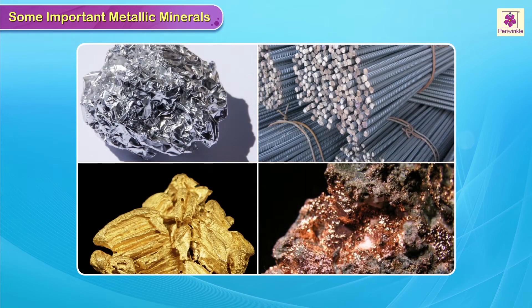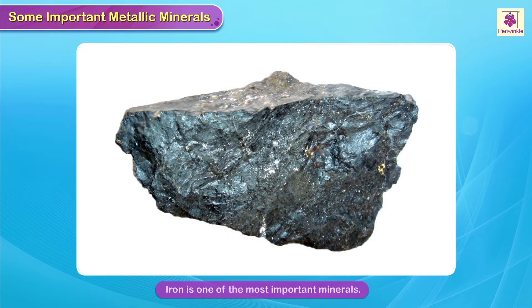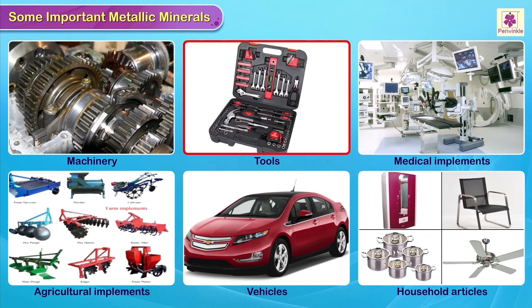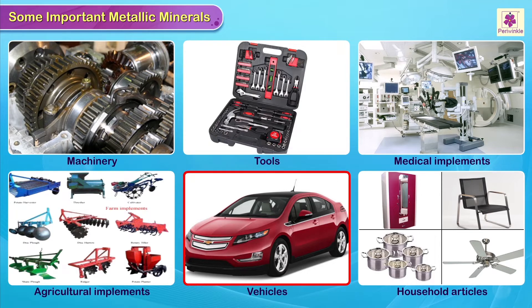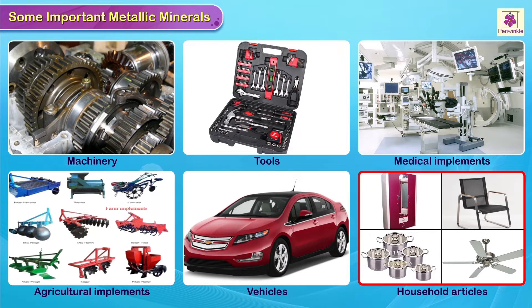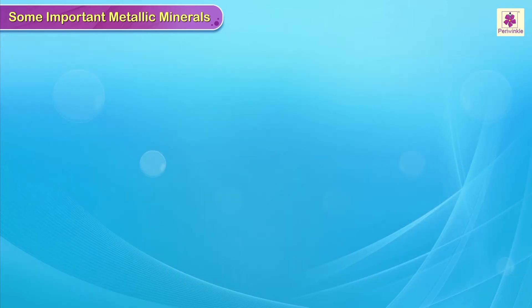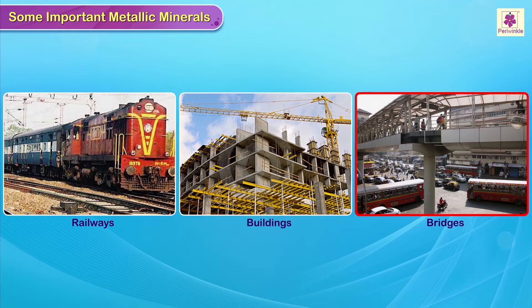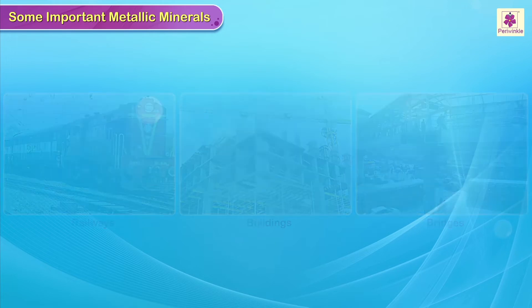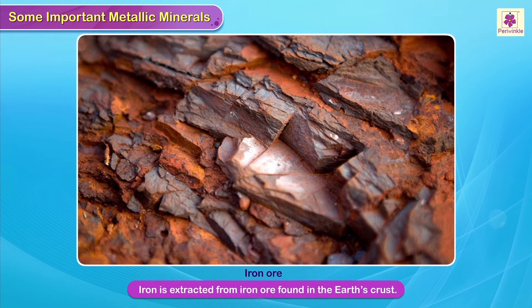Some important metallic minerals found in India: Iron is one of the most important minerals and is used in the manufacture of machinery and tools, medical and agricultural implements, vehicles, and a host of household articles. It is also used extensively in railways, buildings, bridges, etc. Iron is extracted from iron ore found in the earth's crust.